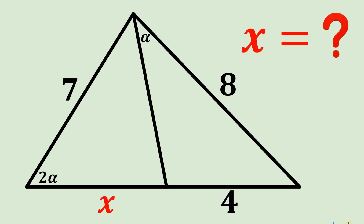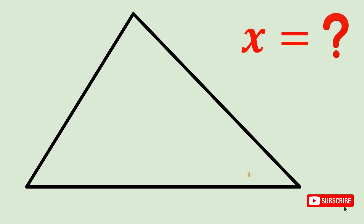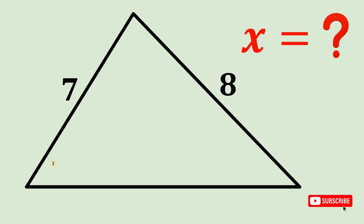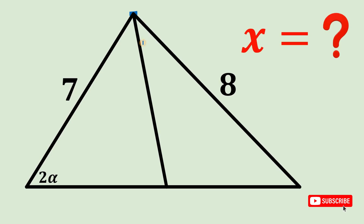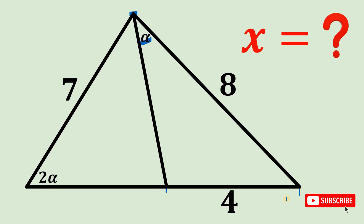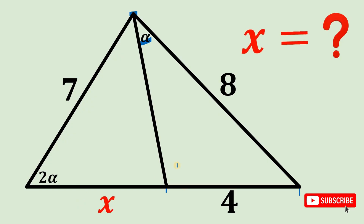Can you solve this geometry challenge? Here's the question. Let's begin with a triangle having side lengths of seven and eight units respectively. From here, let's call this angle equal to two alpha. From this vertex, let's draw a segment and call this angle equal to alpha. This segment measures four units. This is x. The question is: what is the length of this segment x?